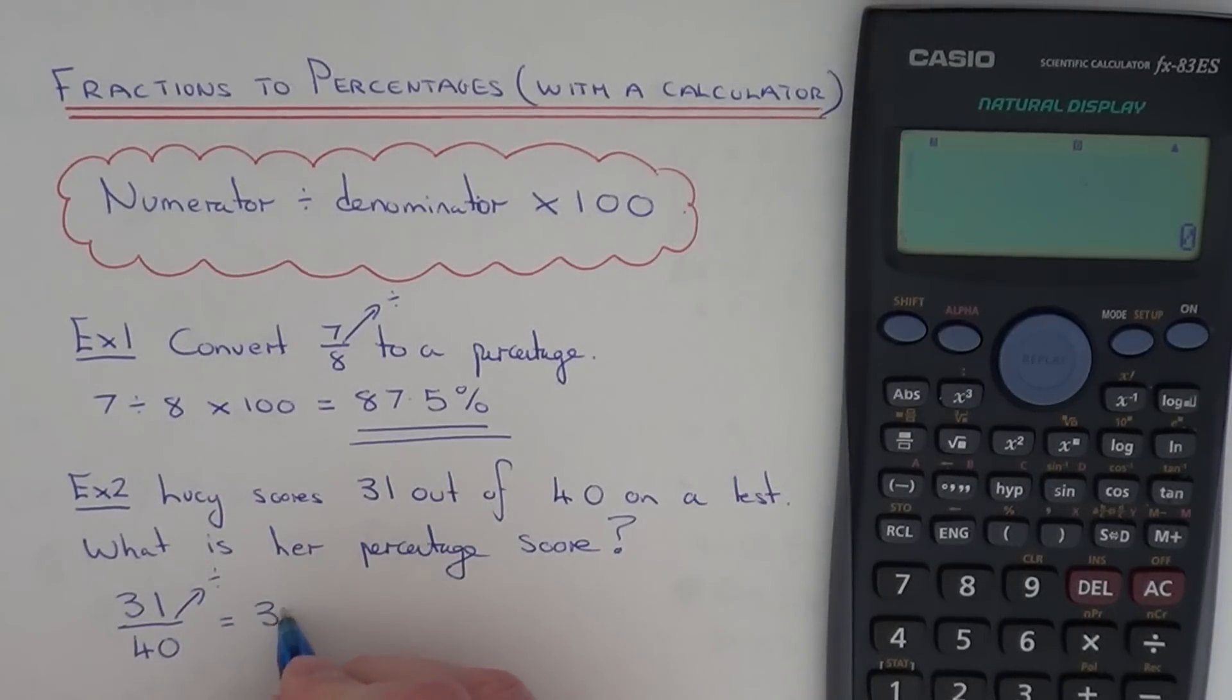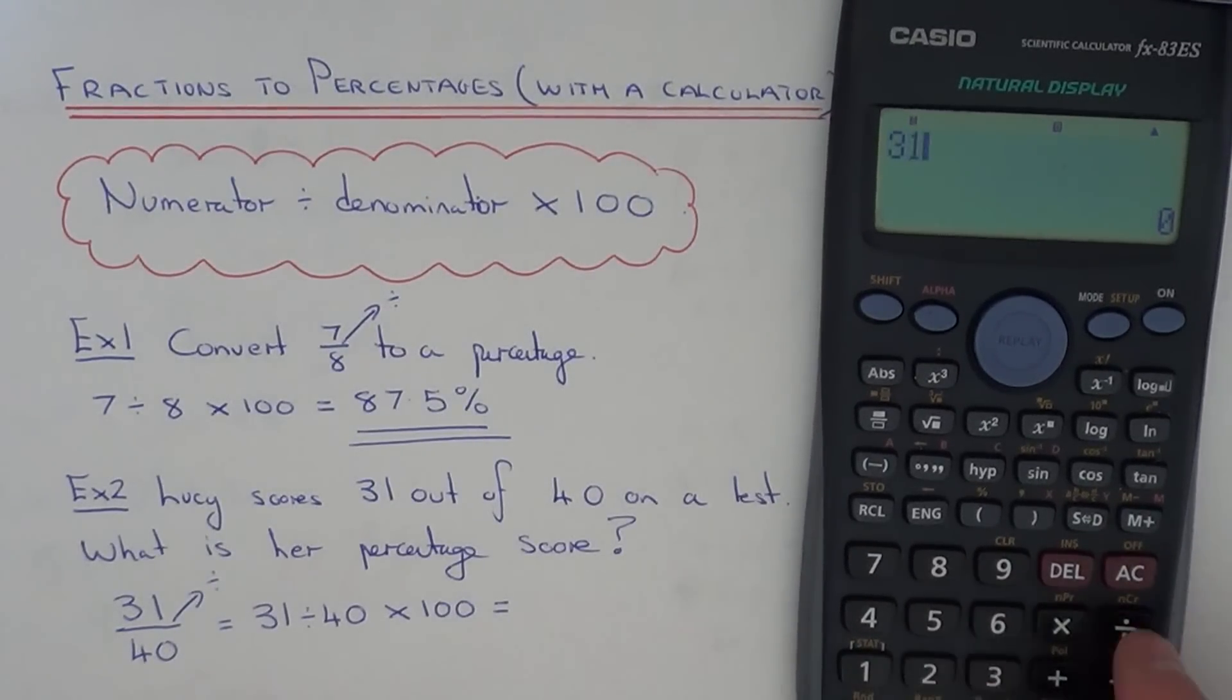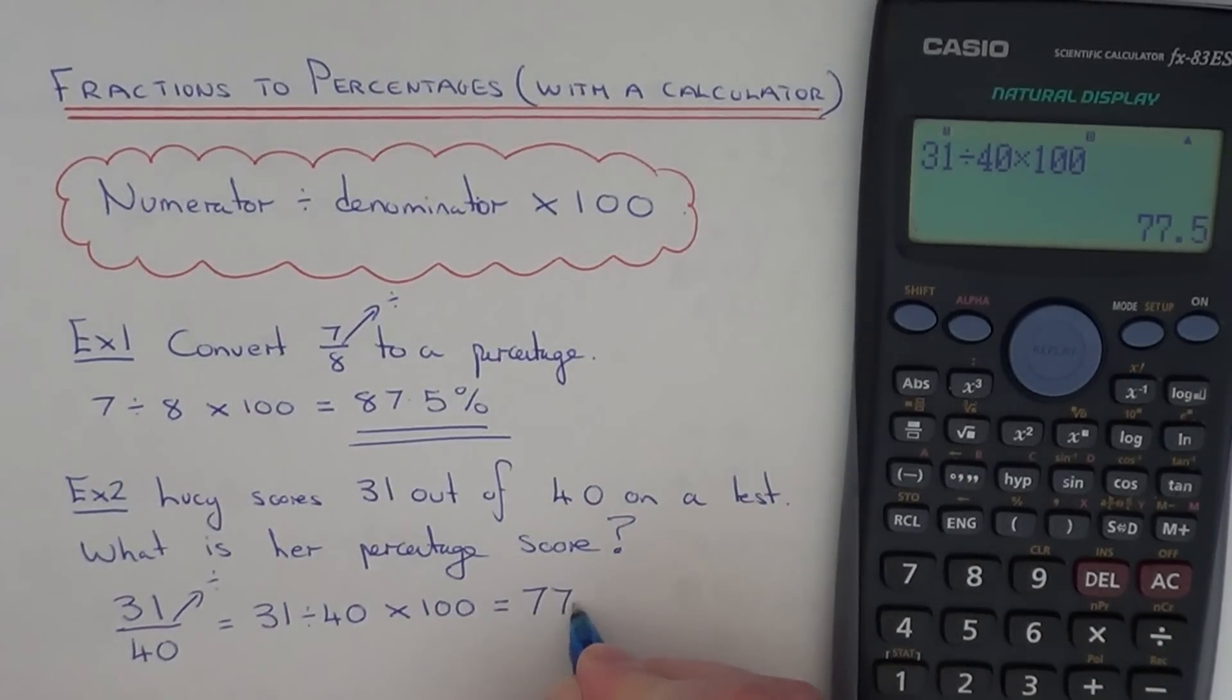So we do 31 divided by 40 and then multiply that by 100. So again just put that in on your calculator. You do 31 divided by 40 multiplied by 100 and we get 77.5%.